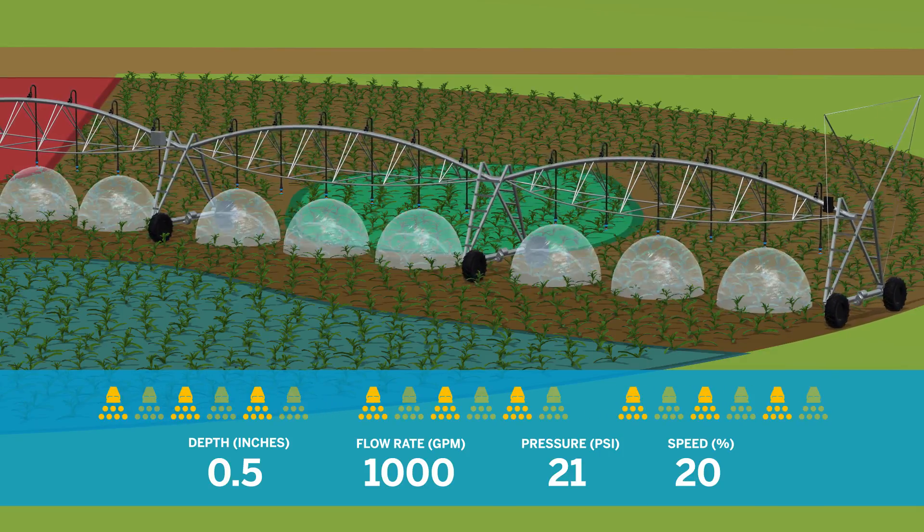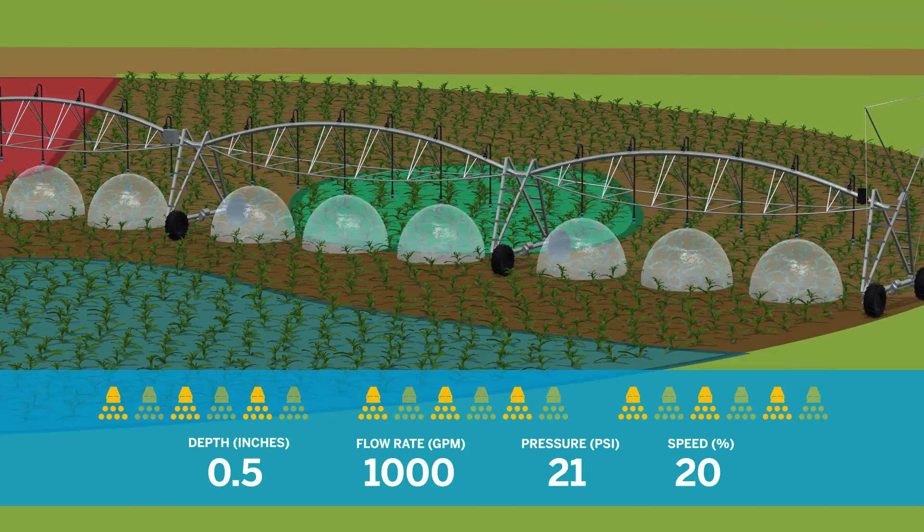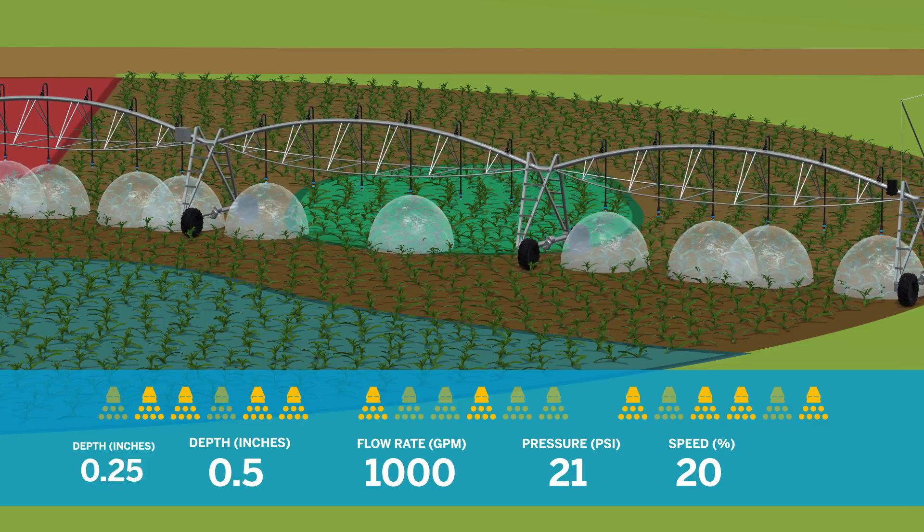As the pivot moves through a variable area, the nozzles will pulse differently to account for the new depth of the area.